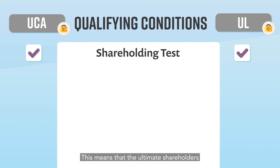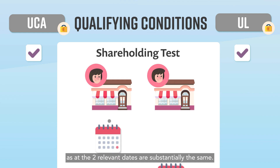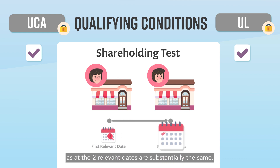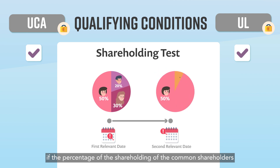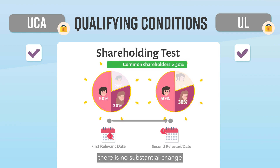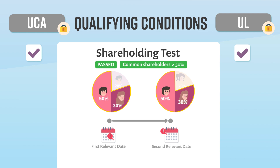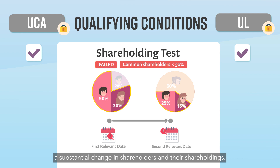This means that the ultimate shareholders and their shareholdings as at the two relevant dates are substantially the same. In other words, if the percentage of the shareholding of the common shareholders as at the two relevant dates are 50% or more, there is no substantial change in shareholders and their shareholdings. Otherwise, it is regarded as having a substantial change in shareholders and their shareholdings.